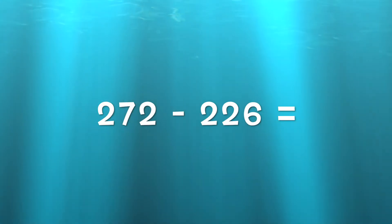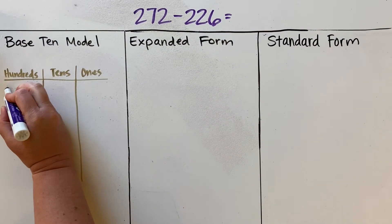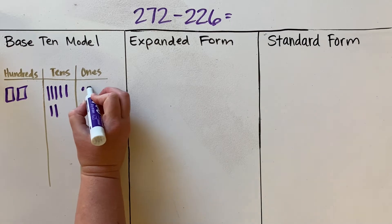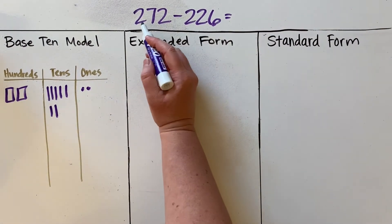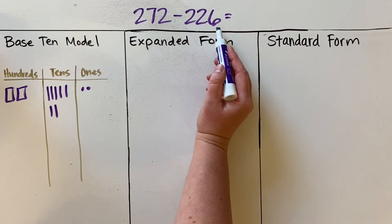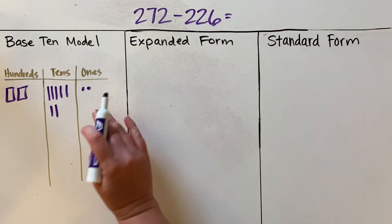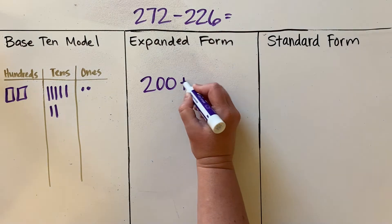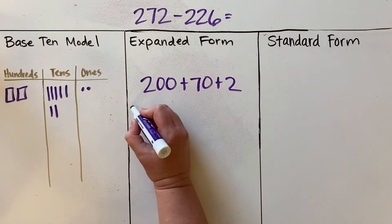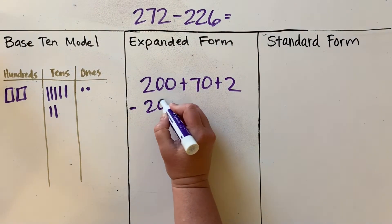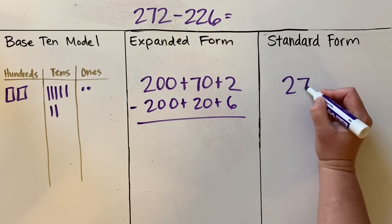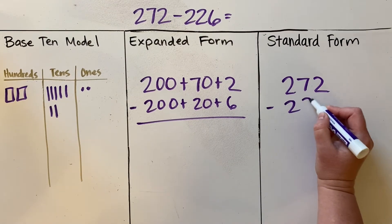Our equation would be 272 minus 226 equals something. With my base 10 model, I'm going to draw two hundreds, seven tens, and two ones—the number that we are subtracting from. Then we can subtract our other number, 226. For expanded form, I'm going to write out 200 plus 70 plus 2, and then I will be subtracting 226. In standard form, writing it out: 272 minus 226.